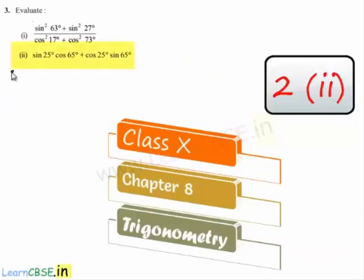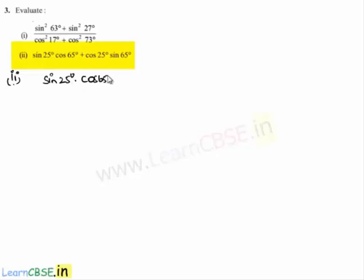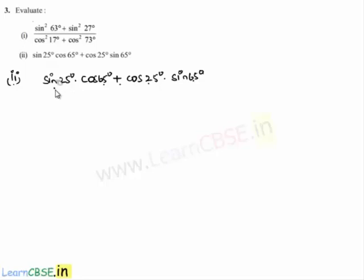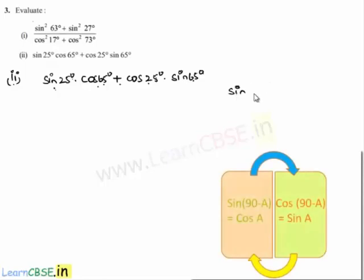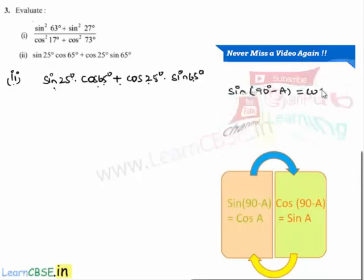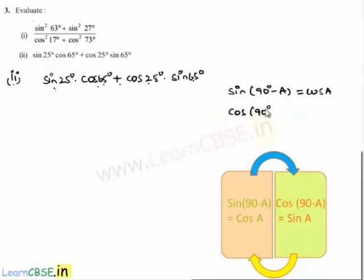Moving on to the second bit of the third problem. The given expression is sin 25 degrees into cos 65 degrees plus cos 25 degrees into sin 65 degrees. If we observe clearly, we can convert one of the terms in terms of sin and the other in terms of cos so that they form an identity, using sin(90 - a) = cos a and cos(90 - a) = sin a.